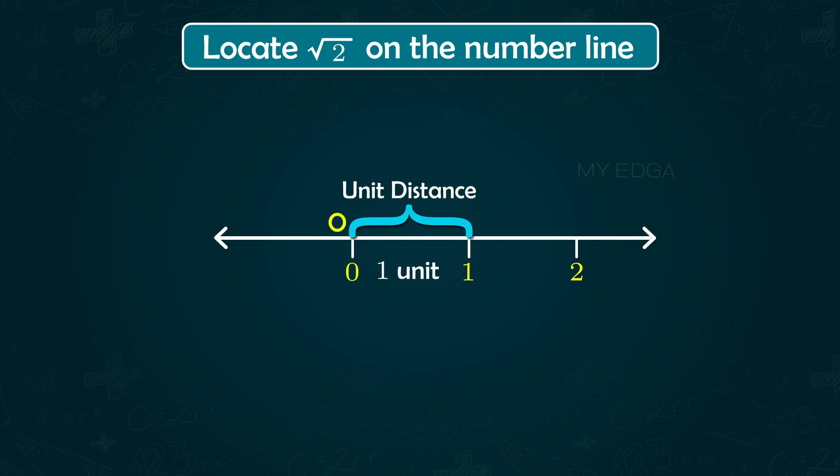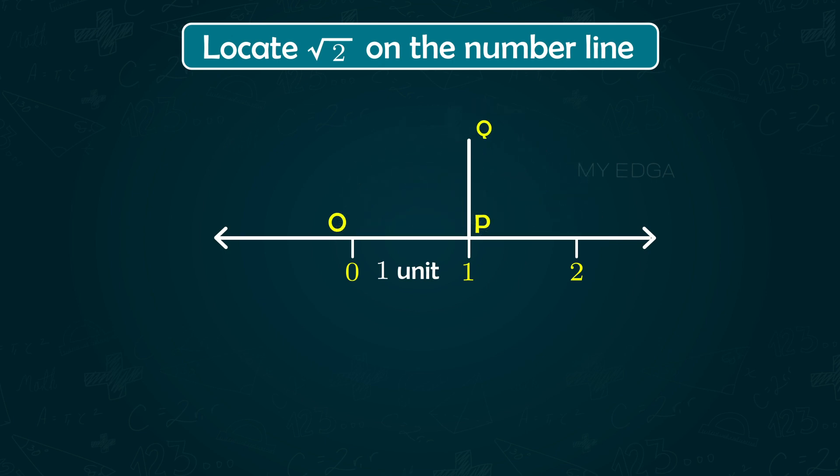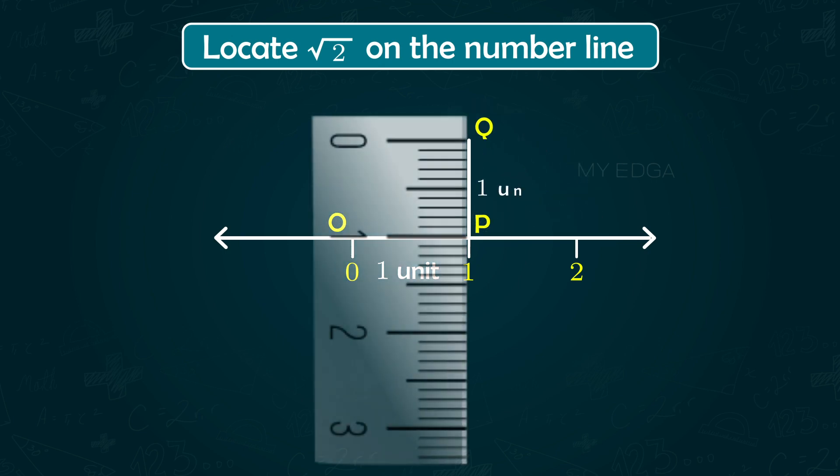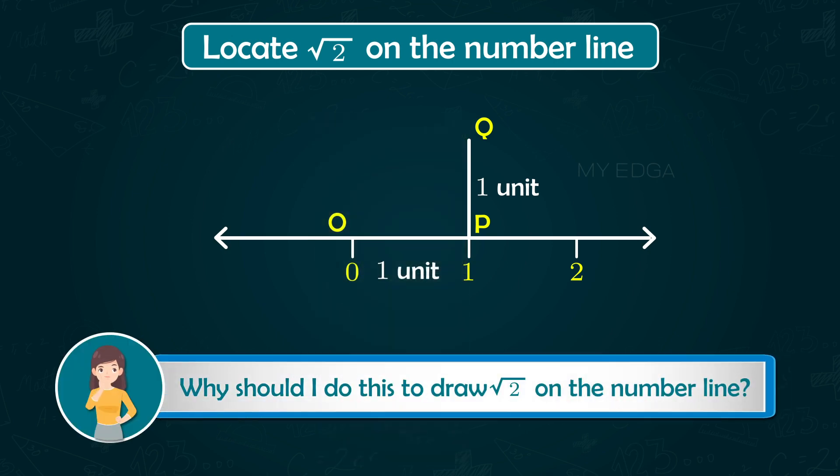Now draw a perpendicular PQ of length one unit. Now you may be thinking why should I do this to draw √2 on the number line. Let's check the reason.